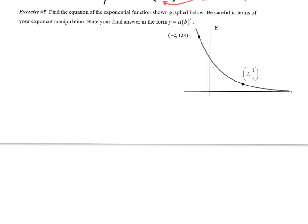In exercise number 5, we're given a graph of an exponential function and want to write y equals a times b to the x. We have two ordered pairs from the graph: (-2, 128) and (2, 1/2). Think about whether this function represents exponential growth or exponential decay — and our final answer should confirm that.